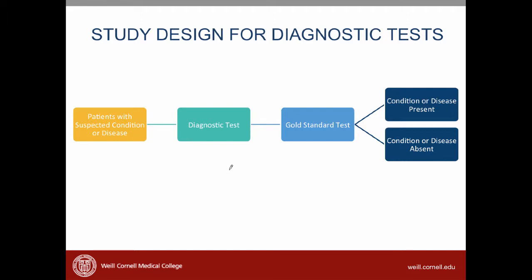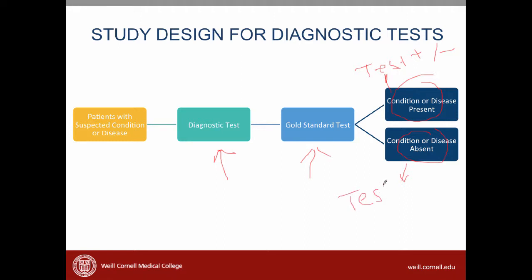Remember, the study design requires that we do two tests on every patient. We have to do the new test that we are studying and compare it with the gold standard test. We then use that gold standard test to see whether a condition was present or whether it was absent. And then we look to see whether patients who had the present condition had a test that was positive or negative. We do the same thing with the group of patients who did not have the disease — we look to see whether the test was positive or negative.